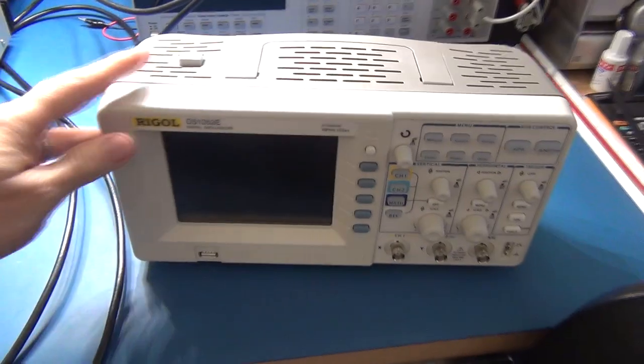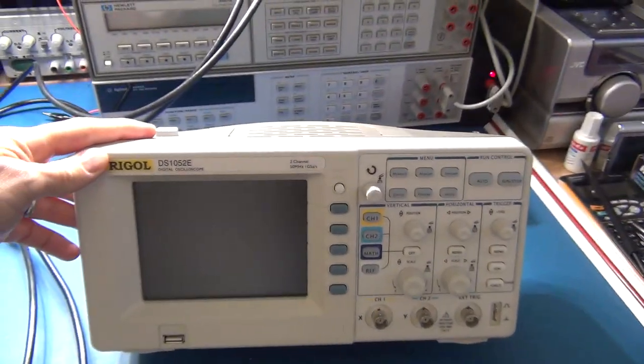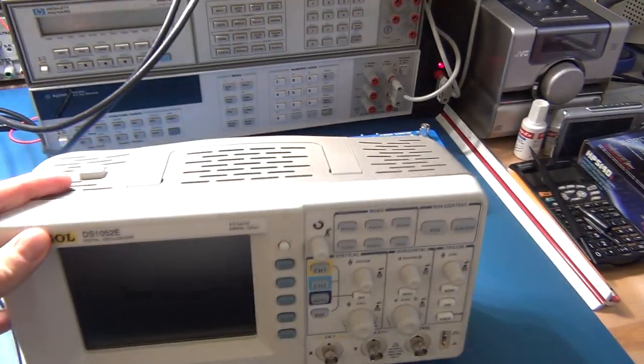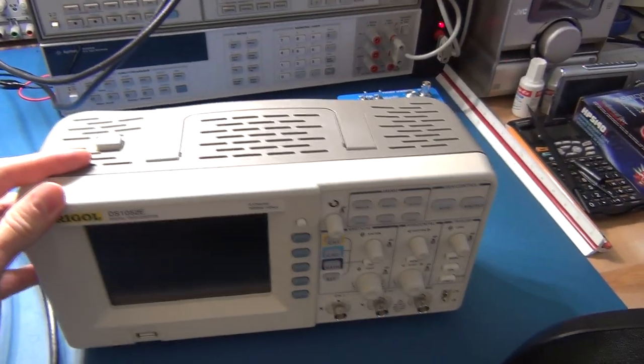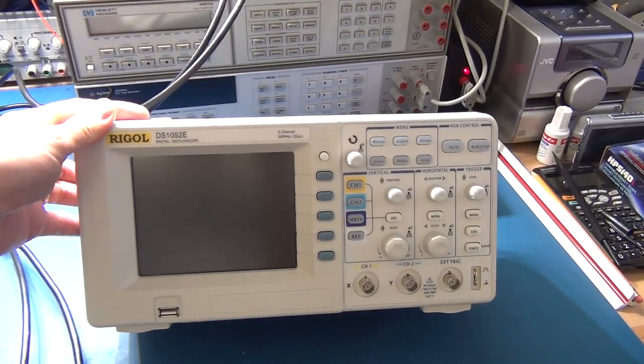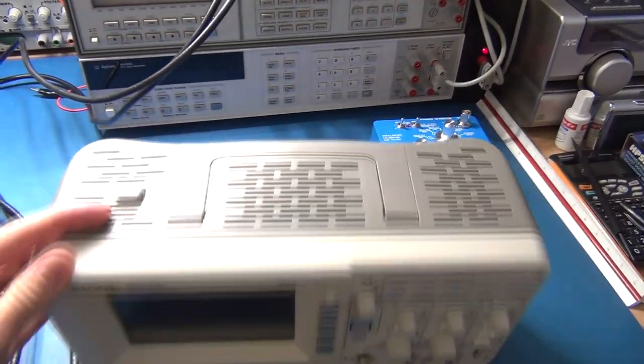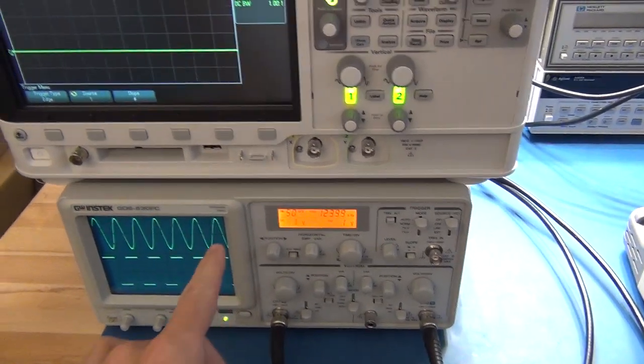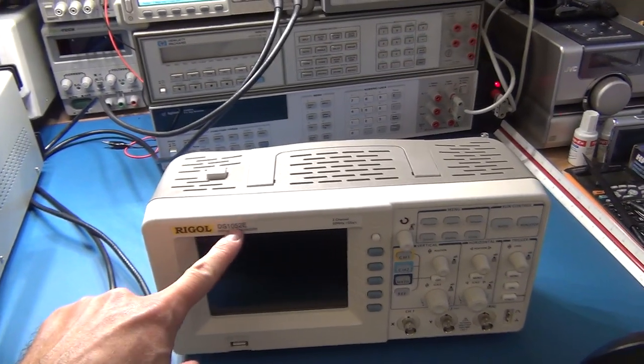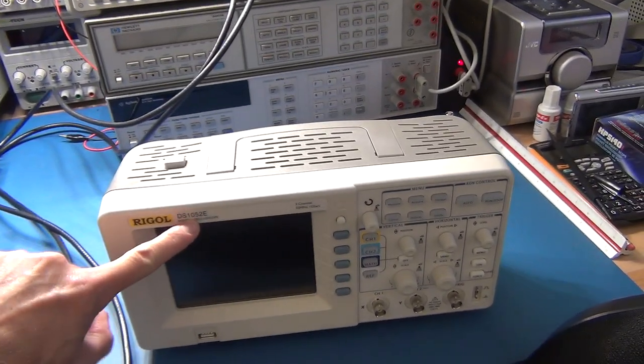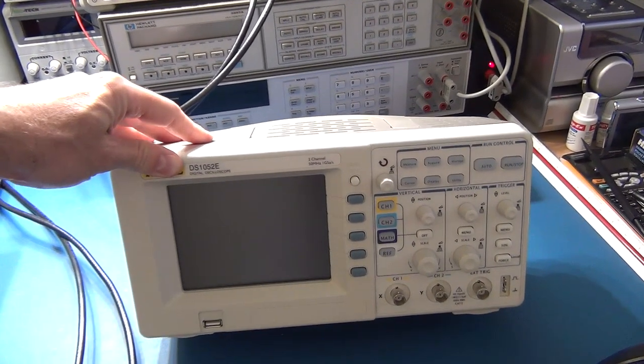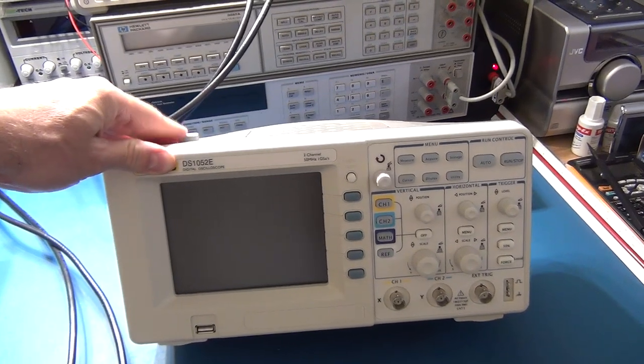And if we look at something like the Rigol. This is the DS1052 but the DS1052 has a very similar footprint. That scope is 100 MHz. I want to bring this to your attention because this analog scope cost about $440, but you can get the 100 MHz version, the 1102E, for under $400, about $380 or $390.